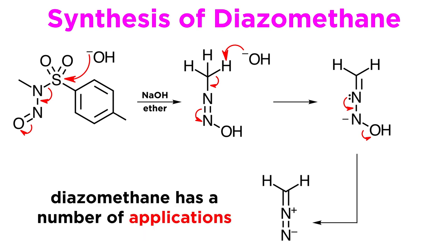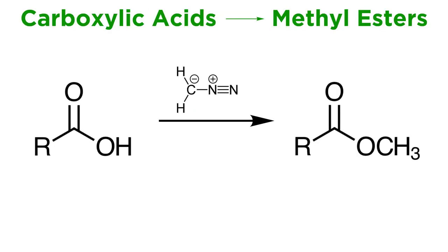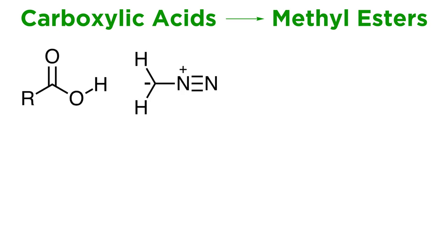Once synthesized, this molecule has some interesting applications. To start with something simple, this can be used to convert carboxylic acids into methyl esters, in case a more typical method like acid catalysis is undesirable for one reason or another. This method is quite straightforward. Considering this resonance structure of diazomethane, we can see that the carbanion will be protonated by the carboxylic acid.